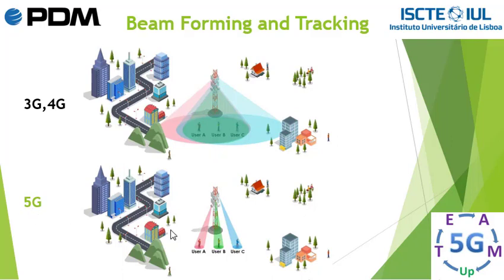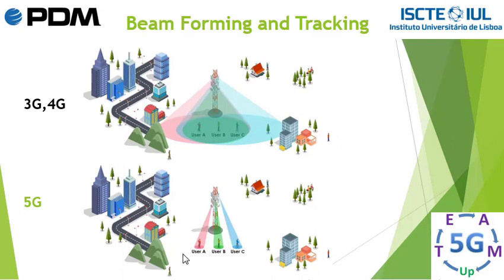To resolve this problem, in 5G the cell tower only transmits the signal for user A to the location of user A, and for user B to the location of user B, and also for user C. If the user moves and changes location, the cell tower starts tracking the user and sends the signal to the new location. We call this beamforming and tracking. To perform beamforming and tracking in small cells, we need to know the exact location of the user. This is why we need to increase security in 5G more than in 3G and 4G, because the 5G network has access to the exact location of the user.